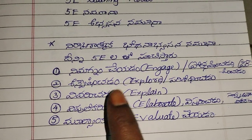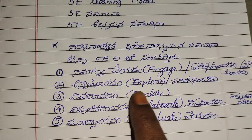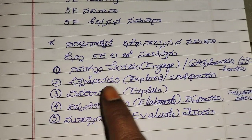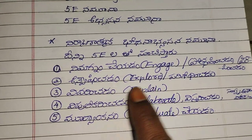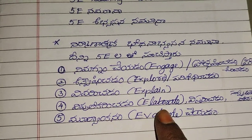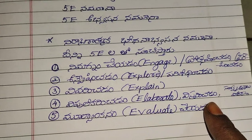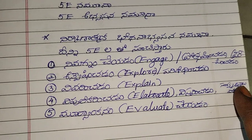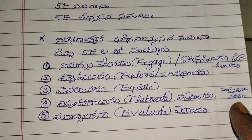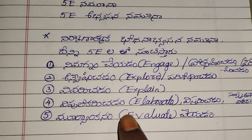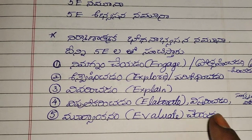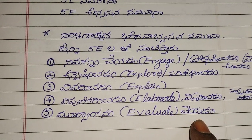Nimagnam means Engage. Unwish means Explore. Viveri means Explain. Vipuli means Elaborate. And Mulya means Evaluate. These are the five steps of the 5E Learning Model.